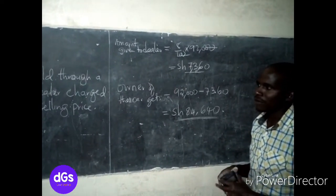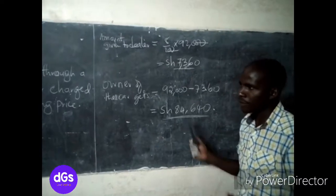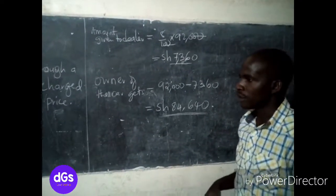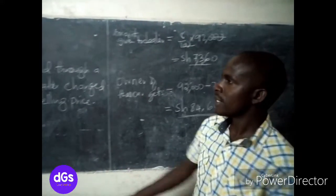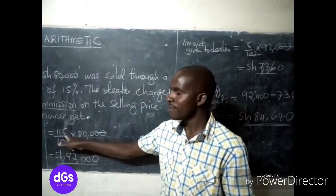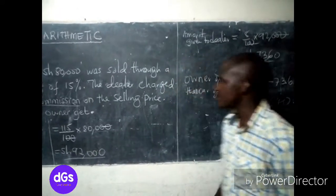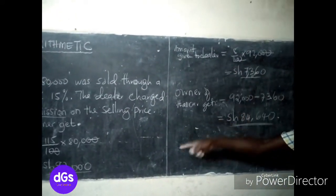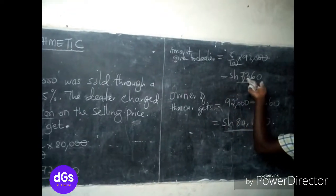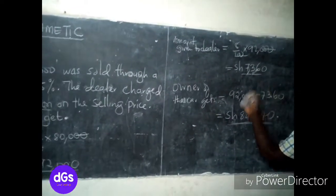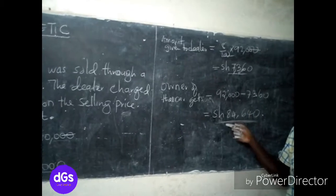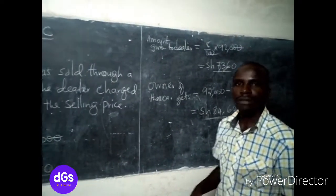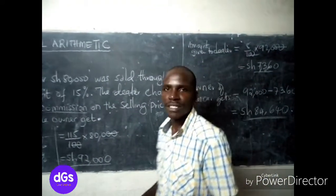It's important to understand and apply these steps to solve such problems. The critical point is: a profit of 15 percent means selling at 115 percent. Then 8 percent of the total selling price goes to the dealer, and the remainder goes to the owner. Thank you for your time.